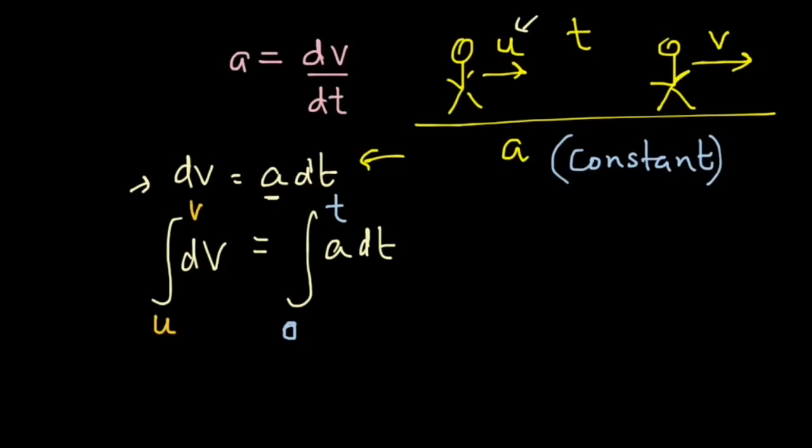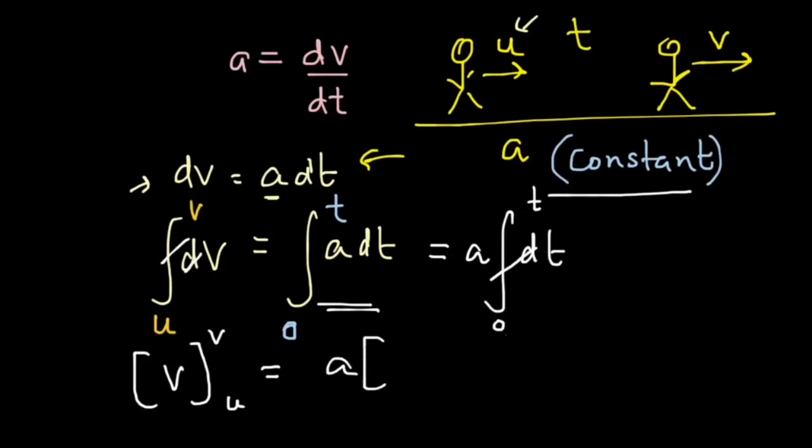Now, if you remember our discussion on integration, you know that we can cancel out these two signs when they are next to each other. And if you don't, please go and check out the video on integration. It has got some useful information for you. We can write the left side as v will have the value from u to v. And that is equal to this integration over here. Because a has been assumed to be constant, we can take it out from integration and write a times dt from 0 to t. And the integration and d symbol are now next to each other. I can cut them out and I can write a multiplied by t which is ranging from 0 to t.